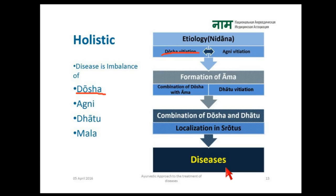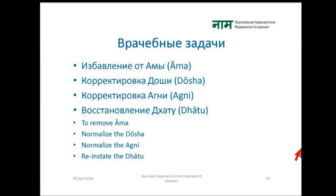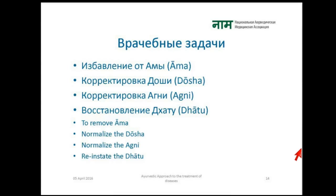We can see the vitiation of Dosha, Agni, Dhatu, and Mala leading to disease. The main aim of the physician is to remove the Ama, normalize the Dosha, normalize Agni, and reinstate the Dhatu. It may seem quite simple — just correct Ama, Dosha, Agni, and Dhatu.